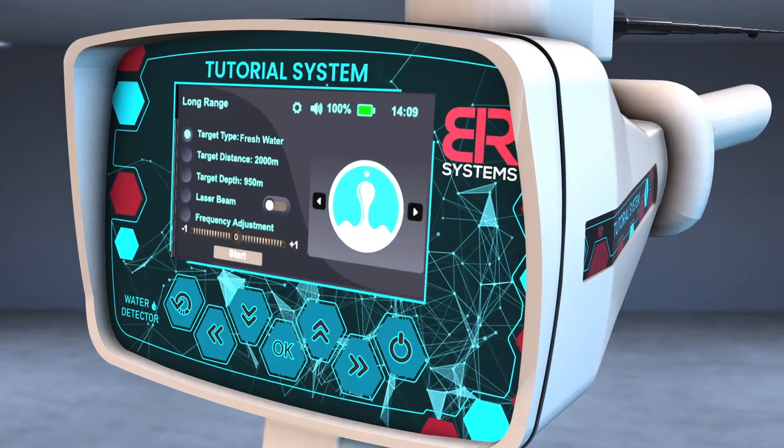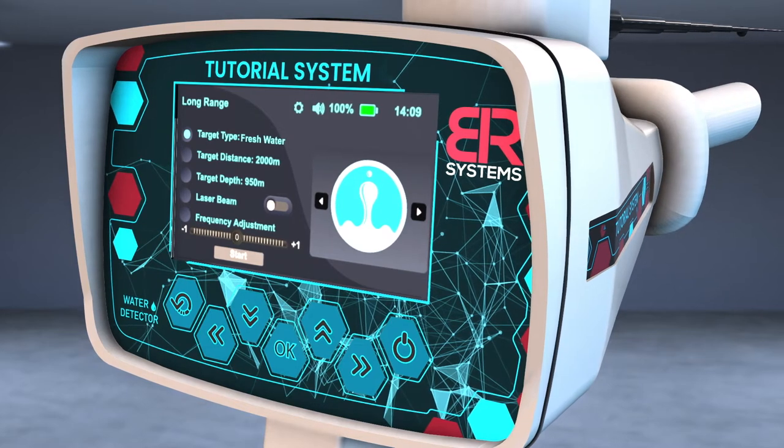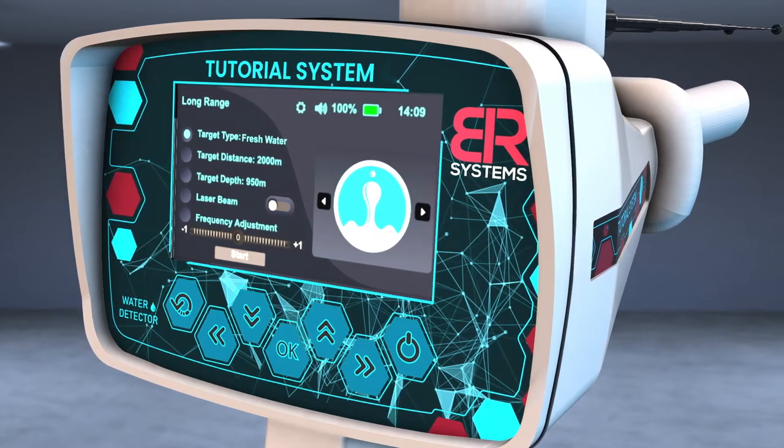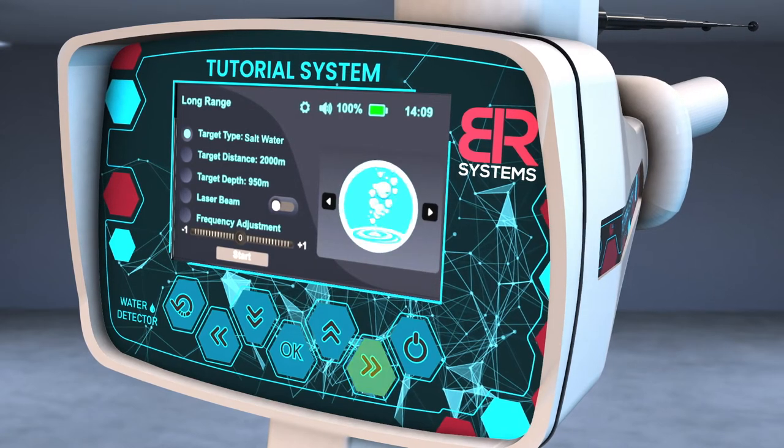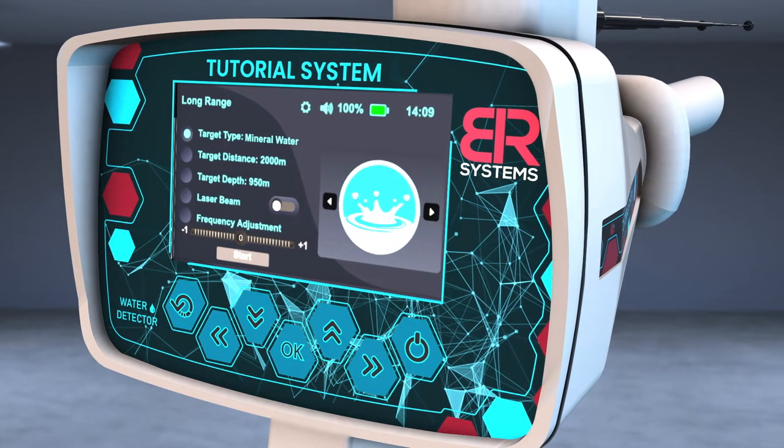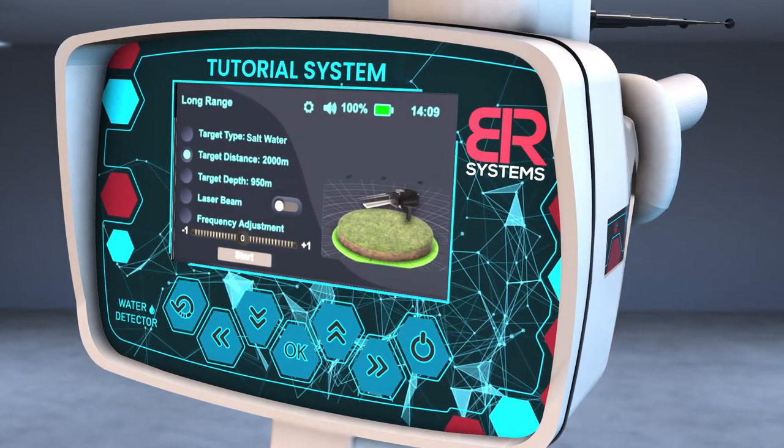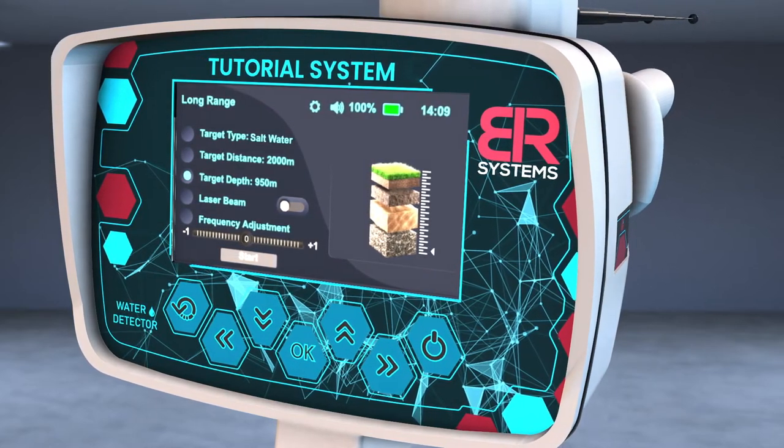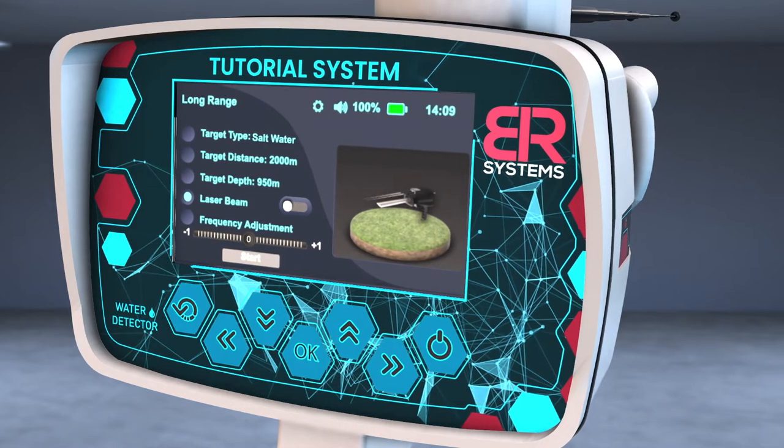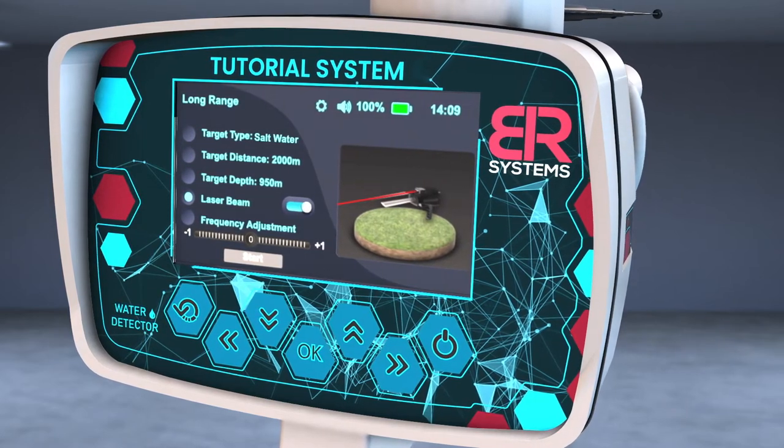A screen will appear to specify the target characteristics before the search process. Select the target to search for using the right and left arrows from the screen interface. Choose the front distance and then the depth of the target. Turn on the laser pointer to better know the direction of the search pointer.